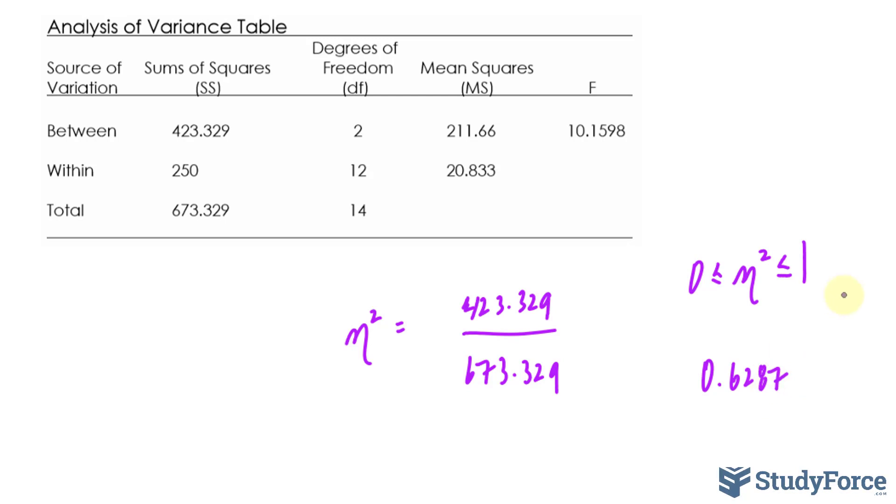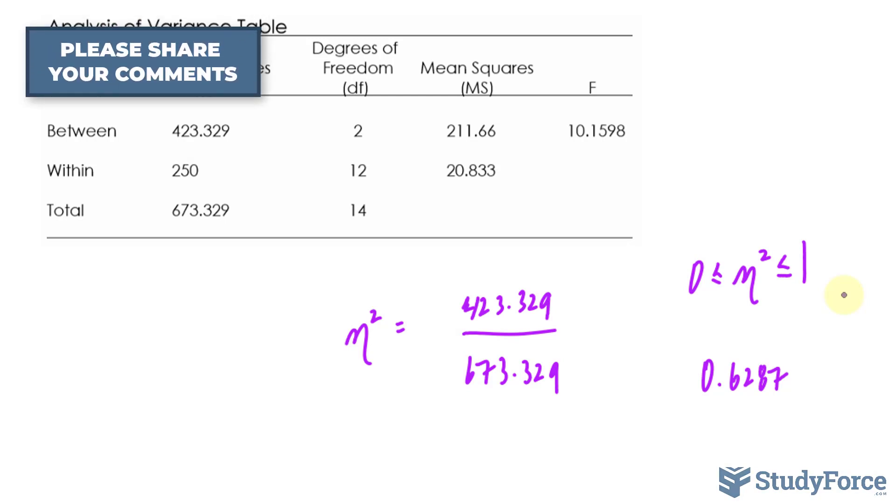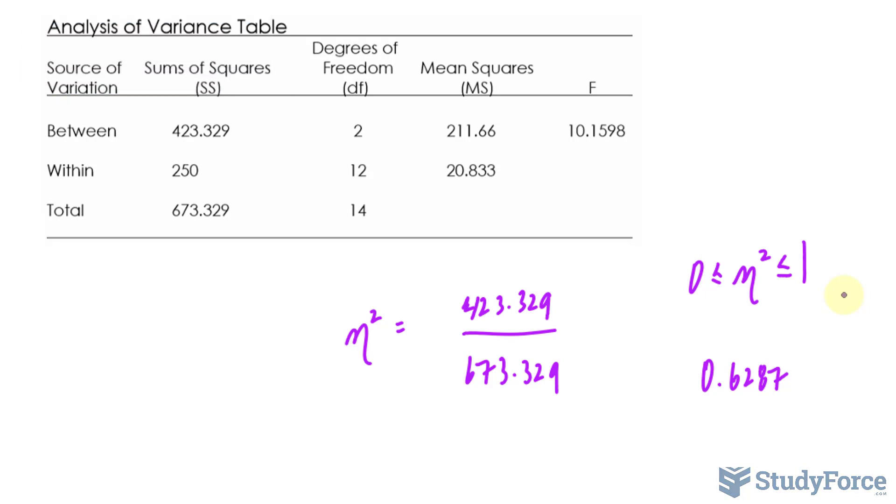Values of eta squared closer to 1 imply that more variation in the data is due to the treatments. Now remember, you do not perform this test if you do not reject the null hypothesis. And in relation to this value, about 63% of the variation that we found in the groups came as a result of the factor that was in focus for this ANOVA test.